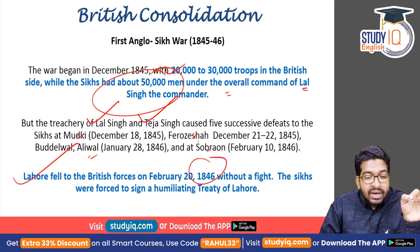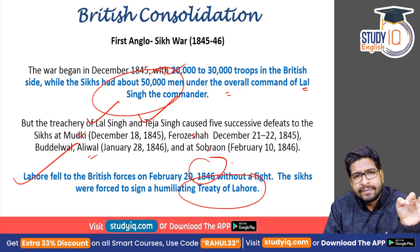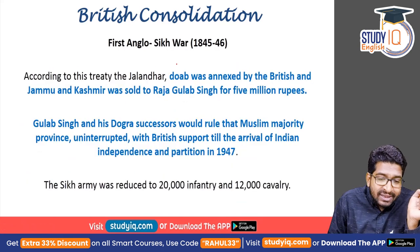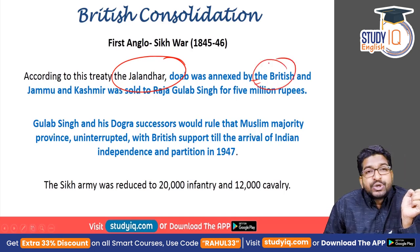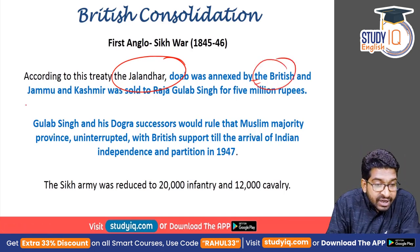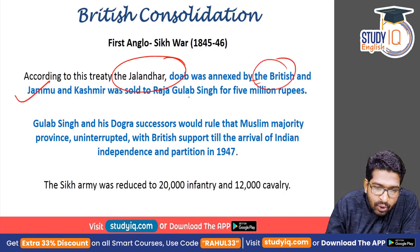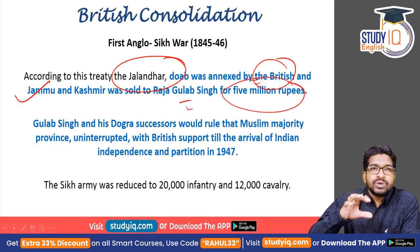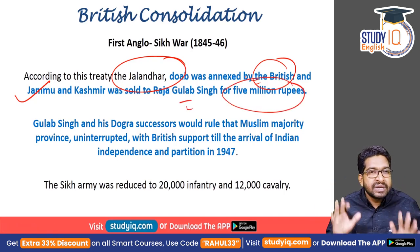The Sikhs were seldom united — there was treachery by Lal Singh and Teja Singh, leading to successive defeats at Mudki, Ferozeshah, Aliwal, and Sobraon. By 1846, Sikh power was greatly reduced and Lahore fell without a fight. Under the humiliating Treaty of Lahore, the Jalandhar Doab was annexed by the British, and the area of Jammu and Kashmir was sold to Raja Gulab Singh for five million rupees — the beginning of the entire Jammu and Kashmir crisis, as Gulab Singh was a Hindu ruler who would govern the Muslim-majority province until 1947.